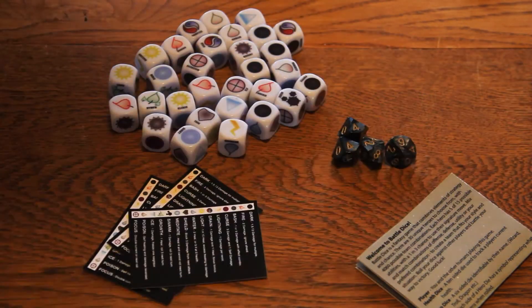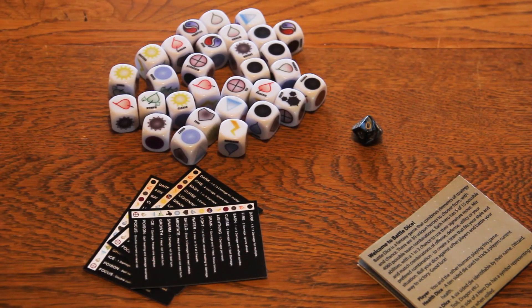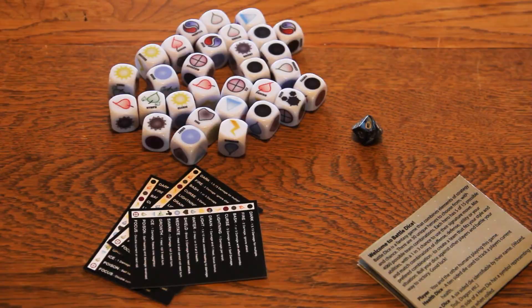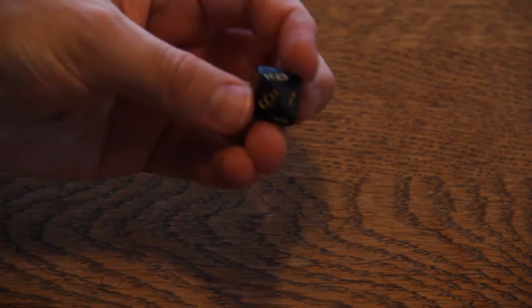Each player gets a black die and sets it in front of them with the 0 side up. This represents and keeps track of your 10 health. Each time you take damage or heal you turn your dice to show the current health face up.